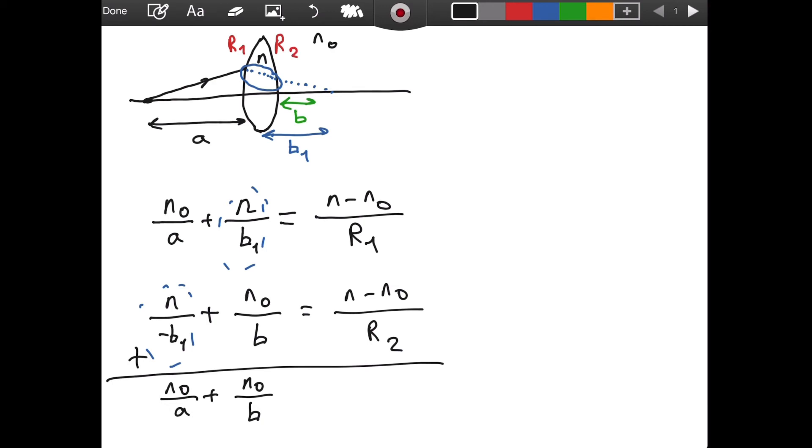So, we have n₀ divided by a plus n₀ divided by b. And, as I argued, n divided by b₁, it is gone. Because, we have plus, minus, it gives you zero. So, this is equal to,